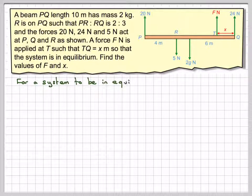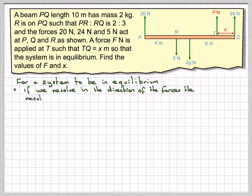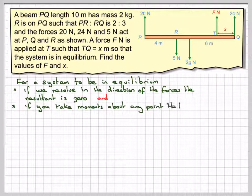For a system to be in equilibrium we need two things. If we resolve in the direction of forces the resultant will be equal to 0. And if you take moment about any point the total moment of forces is equal to 0.